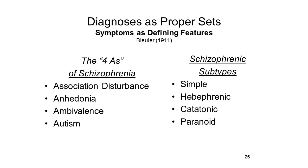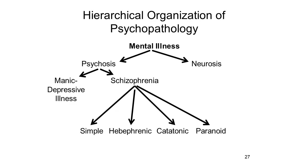Bleuler further distinguished four subtypes of schizophrenia by adding defining features. In simple schizophrenia, you simply had the four A's. In hebephrenic schizophrenia, you added a feature of childlike demeanor. In catatonic schizophrenia, you added a feature of motor immobility. In paranoid schizophrenia, the patient showed delusions. The result was a nested hierarchy, just like the ones familiar from the lecture on categorization. There were two major forms of mental illness—psychosis and neurosis—two major forms of psychosis—manic depressive illness and schizophrenia—and four forms of schizophrenia: simple, hebephrenic, catatonic, and paranoid.